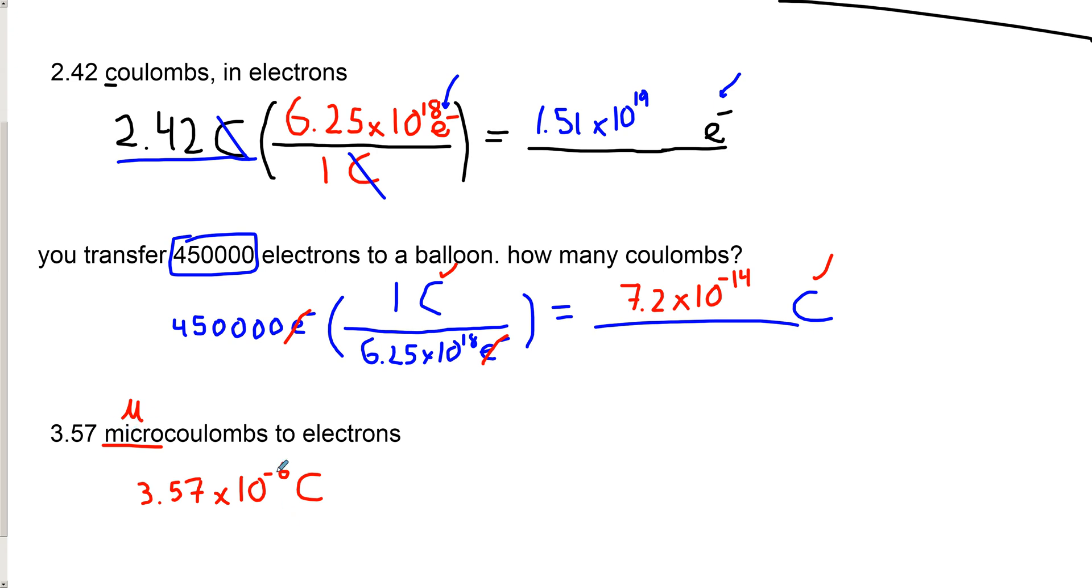Then we have to get our conversion bracket up. So we've got that. Boom. And we know that our answer is going to be in electrons. So now all we must do is get the right conversion in here. So the right conversion is to put coulomb on the bottom and 6.25 times 10 to the 18 up top.